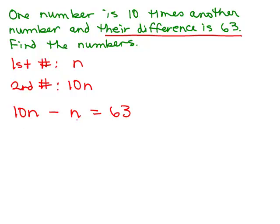Let's go ahead and pick the 10n as the bigger number minus the smaller number, should equal 63.